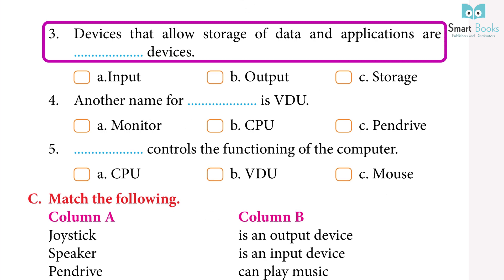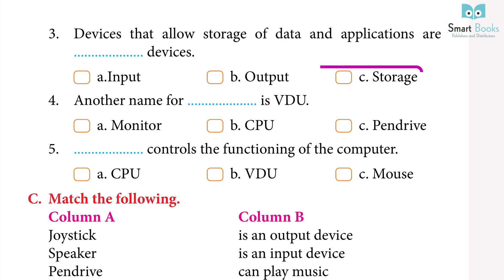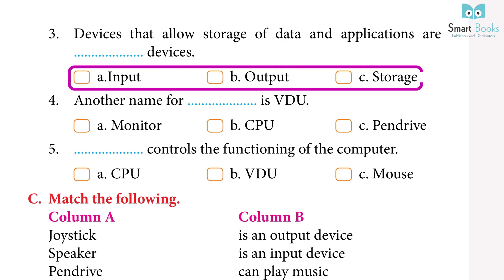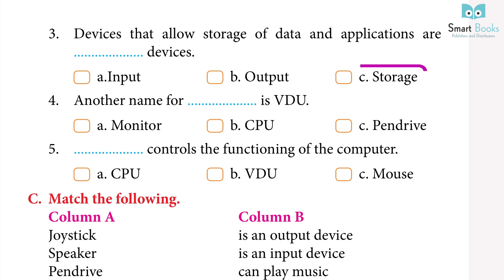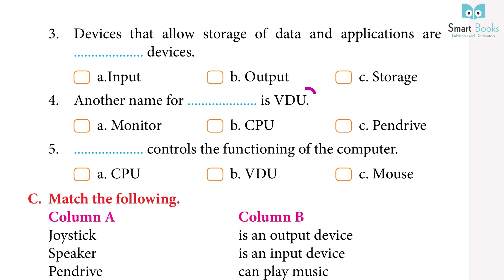Question 3: devices that allow storage of data and applications are dash devices. A. Input, B. Output, C. Storage. Answer: C. Storage.